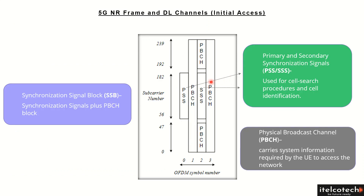Looking at these allocations, the number of subcarriers allocated for PSS ranges from subcarrier 56 to 182, so it is around 126 subcarriers that are allocated exclusively for PSS within a frame.